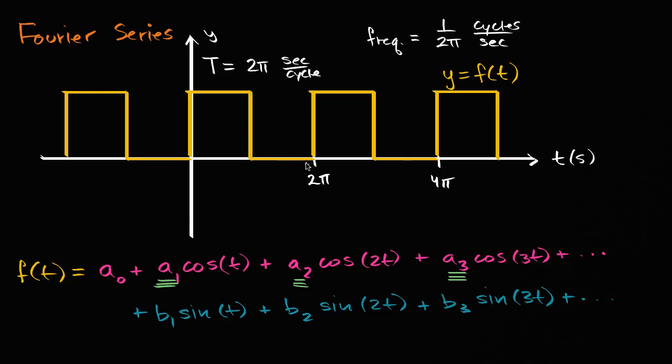We could have done it over other intervals of length two pi, and if this period was other than two pi, we would have done it over intervals of that period. But I'm focusing on two pi because it makes the math a little bit cleaner and simpler, and then we can generalize in the future.